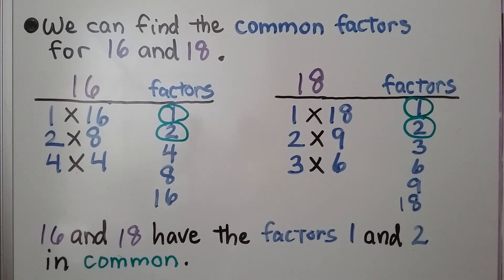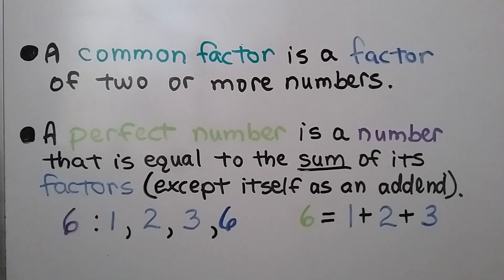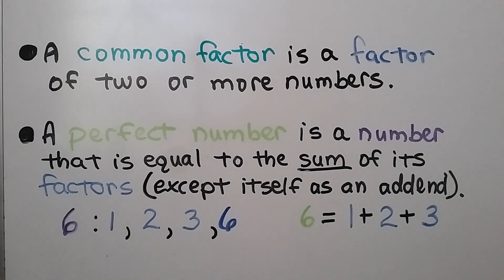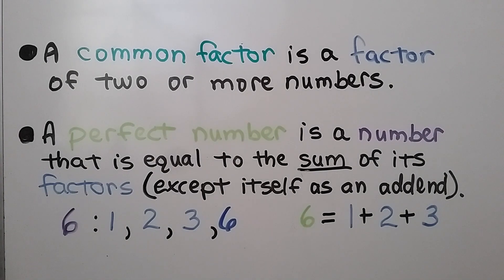So 16 and 18 have the factors 1 and 2 in common — those are the common factors. A common factor is a factor of two or more numbers. We might even have three or four numbers where we make lists of all their factors and find what they have in common.